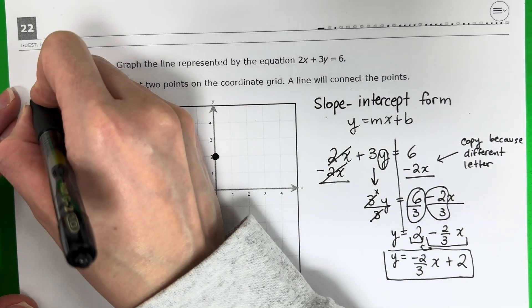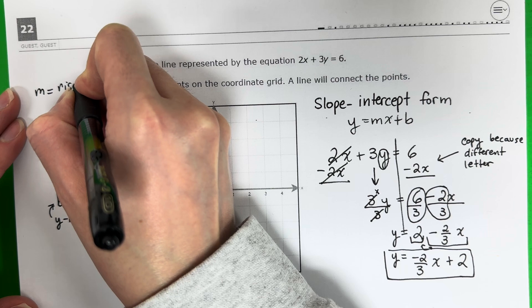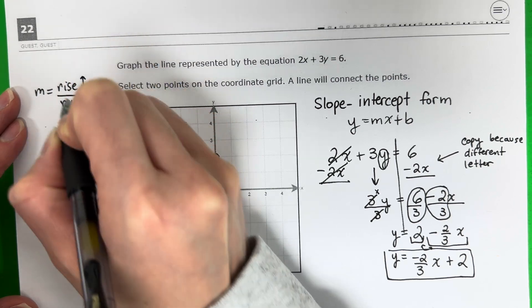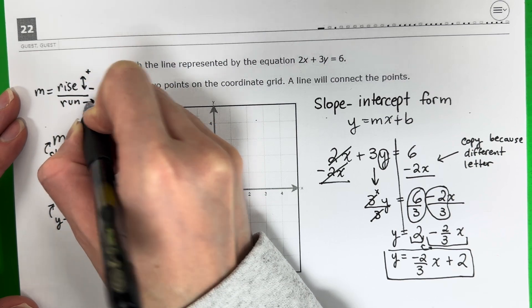Now for the slope. For the slope, you need to do rise over run. Rise is up and down. Up is positive. Down is negative. Run is to the right.